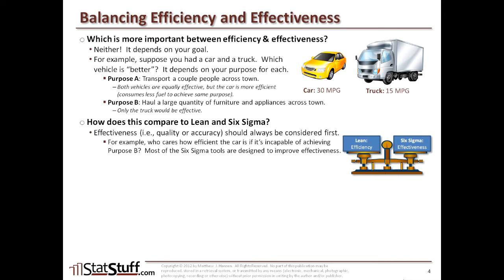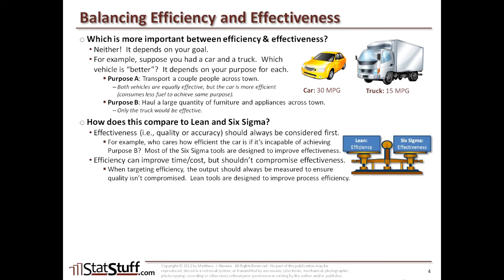A lot of the Six Sigma tools we have are designed to improve effectiveness — the quality or accuracy of the output. Efficiency can improve time and cost, and that's a really good thing, but when we try to focus on improving efficiency, we should never compromise effectiveness. So if a project is targeting efficiency, it's important that we continue to measure the output to ensure we don't compromise the quality or accuracy of that output. Lean tools are what we use to help focus on improving that process efficiency.